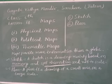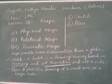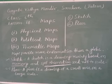The third type is thematic maps. Some maps focus on specific information such as road maps, rainfall maps, maps on distribution of forests, industries, etc. These are known as thematic maps. Suitable titles are given on the basis of information provided in these maps.